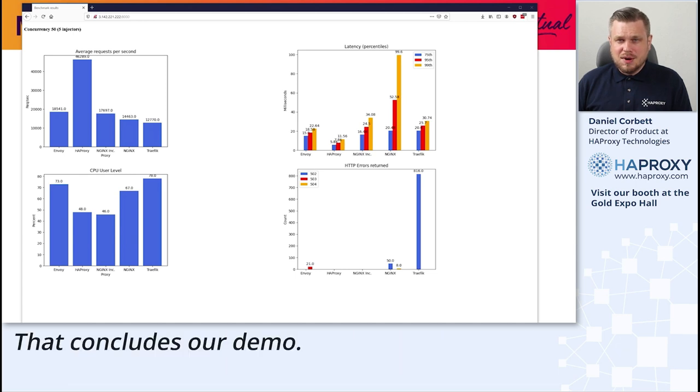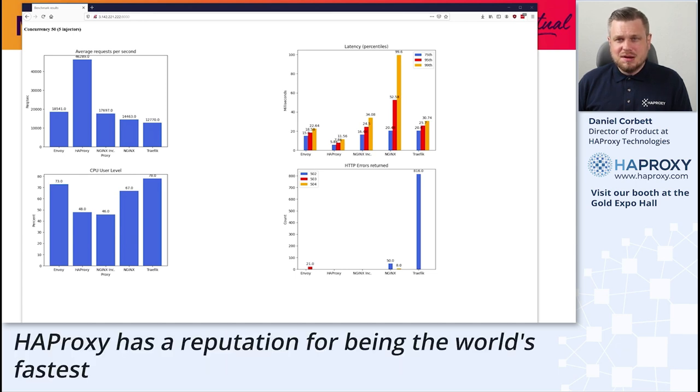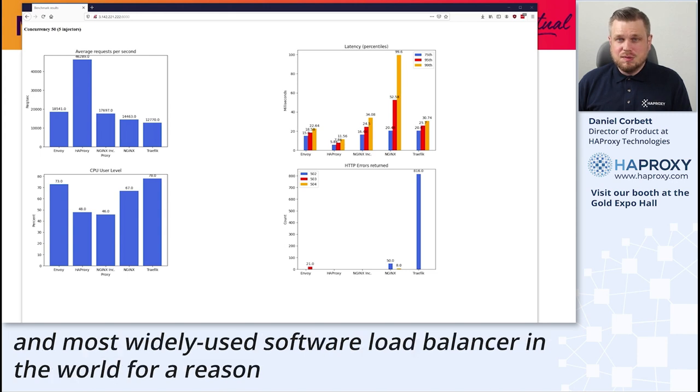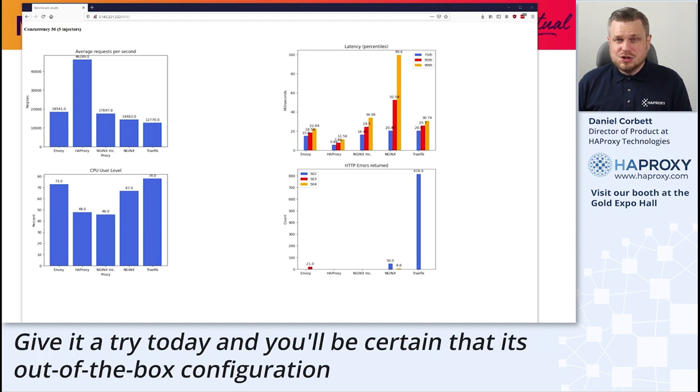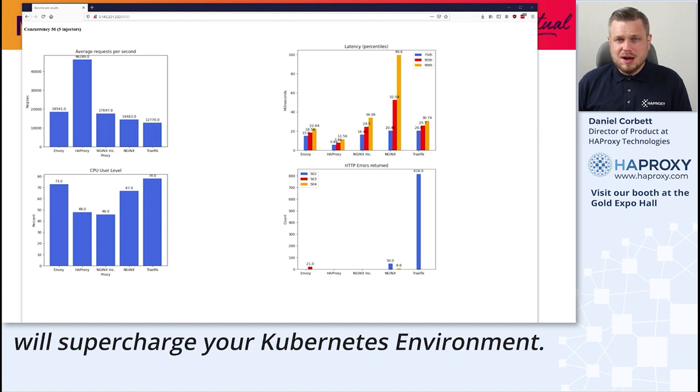That concludes our demo. HAProxy has a reputation for being the world's fastest and most widely used software load balancer in the world for a reason. Give it a try today and you'll be certain that its out-of-the-box configuration will supercharge your Kubernetes environment.